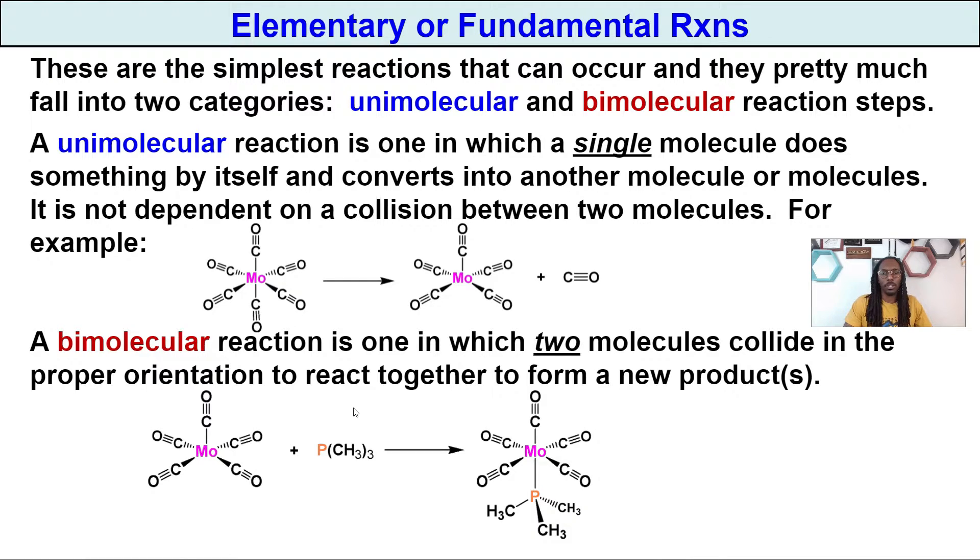If we look at bimolecular reactions, this is basically where our reaction is one in which two molecules are going to collide together to form one whole new product. So if we look at this complex once again, and then it's going to combine with another ligand over here. And once it combines with this step here, now we have one whole product here. So that's how we have to think about it.